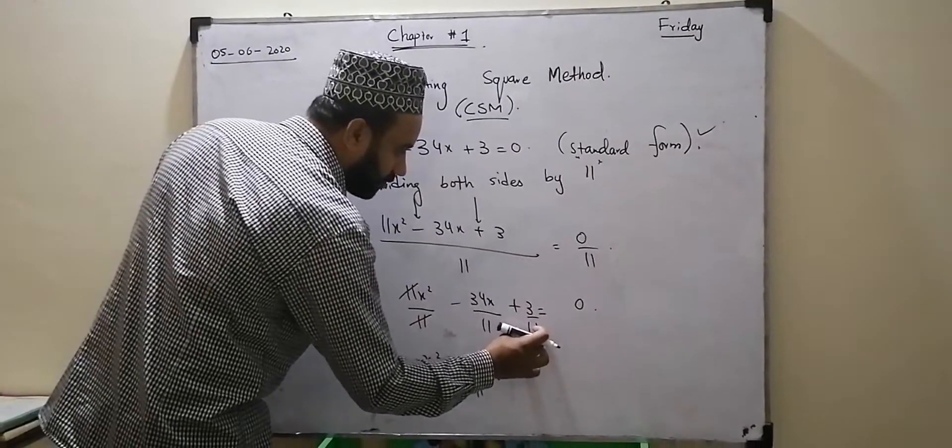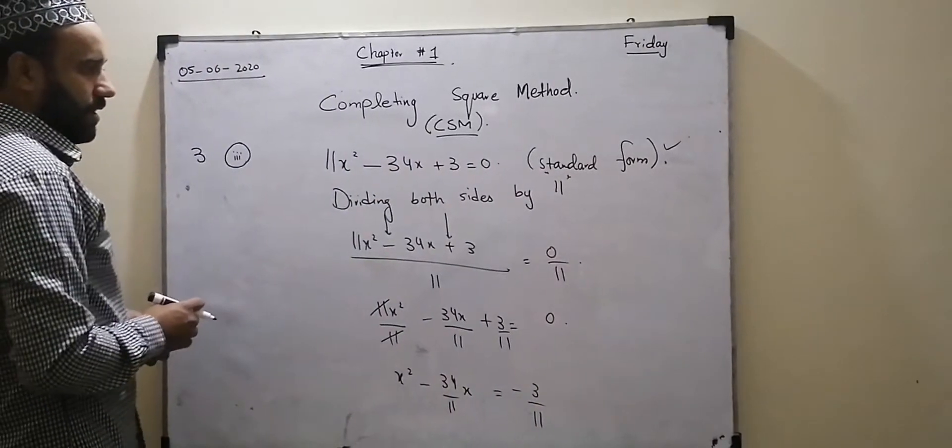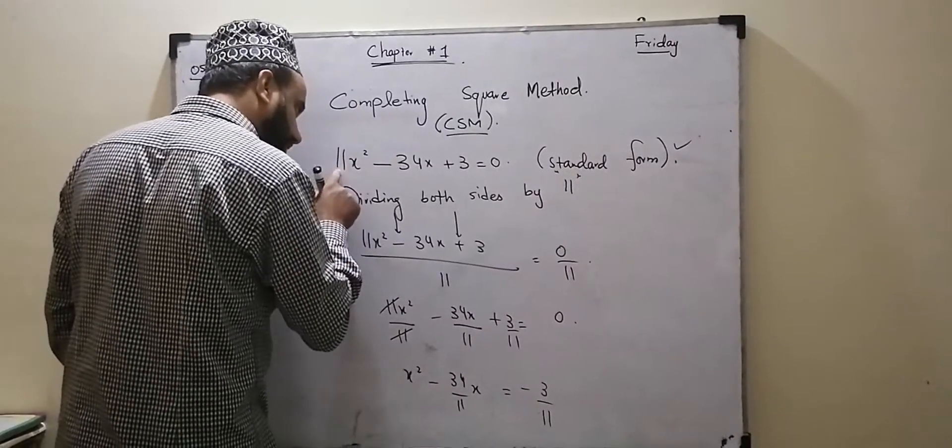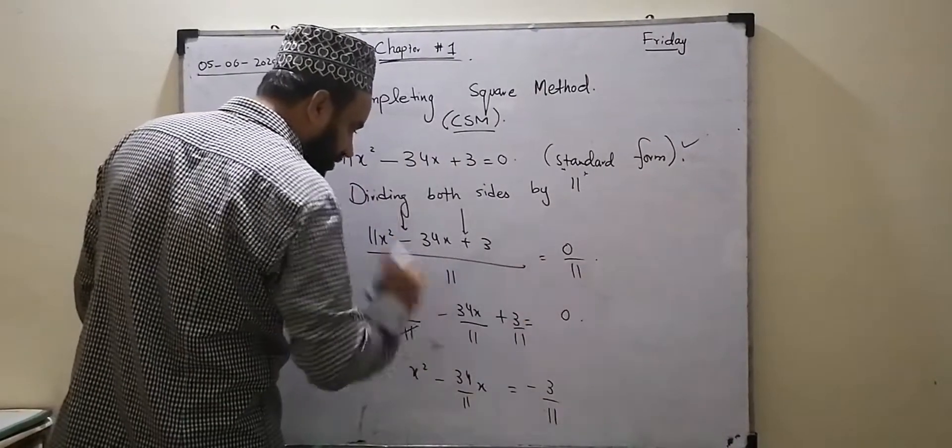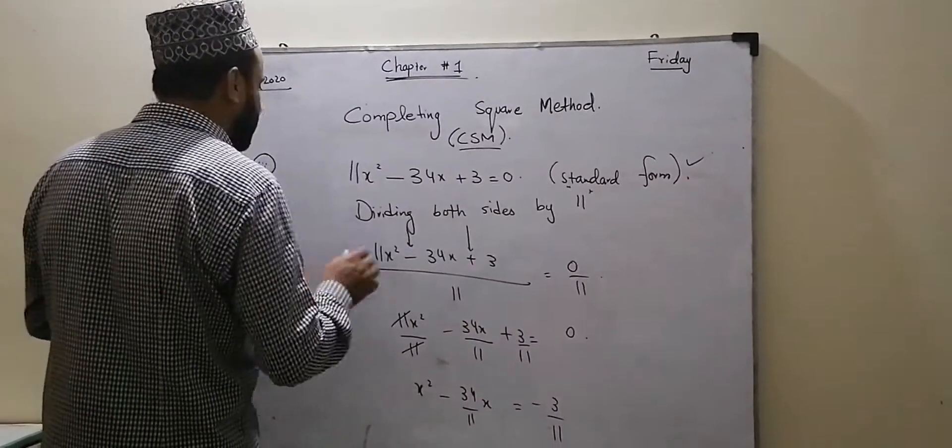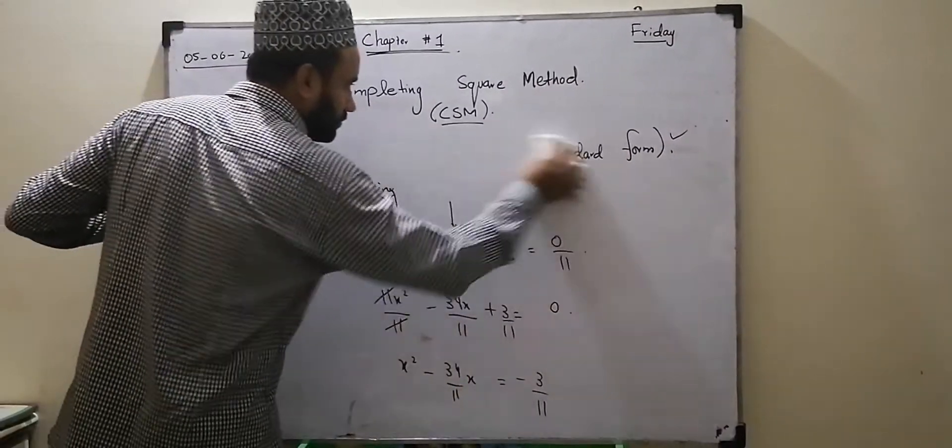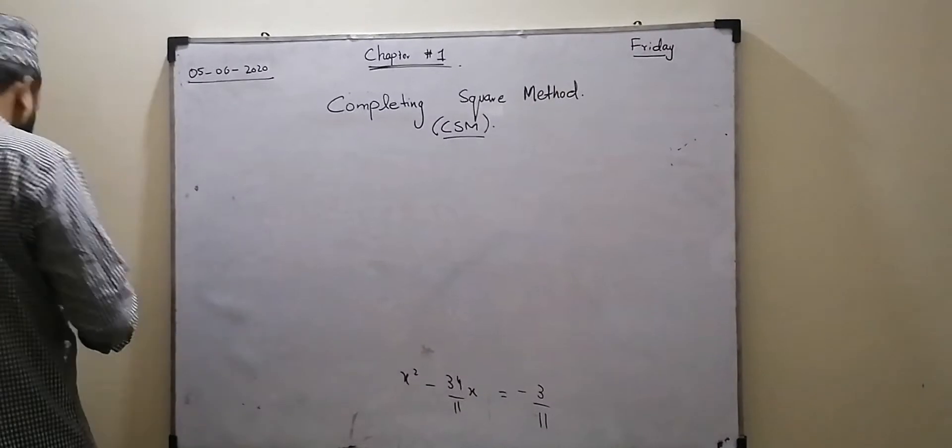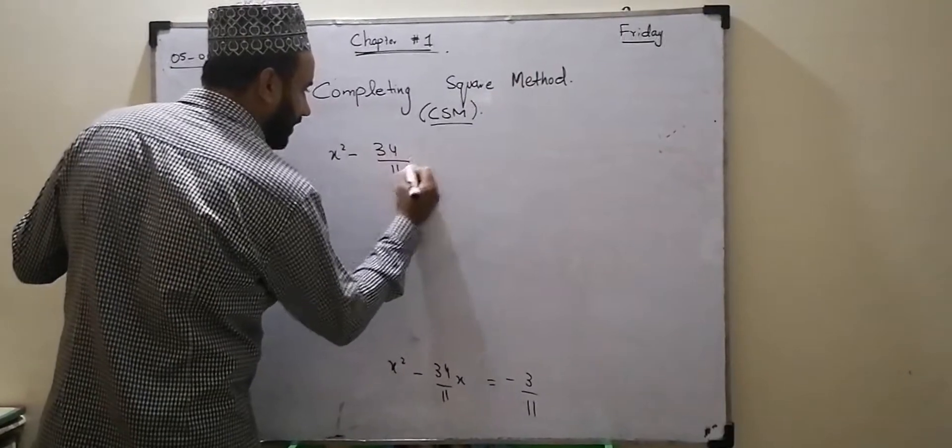Next step, we will move the constant term to the right side of equality. Number 1 is standard form and convert. Number 2 is divide coefficient. The coefficient of x² we need to divide. Then we will move the constant term to the right side.